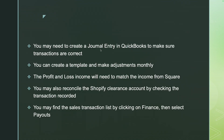You may create a journal entry in QuickBooks to make sure that transactions are correct. You can create a template and make adjustments monthly — I'm all about creating recurring templates in QuickBooks, whether for Square, Shopify, or any app. The Profit and Loss income will need to match the income from Shopify. You can also reconcile your Shopify Clearance account by checking the transactions recorded. To get that information, click on Finance then select Payouts.